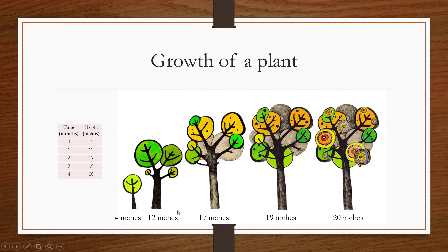If we put this in table form, at the beginning zero months it's four inches, one month 12 inches, two months 17, three months 19, and four months 20.